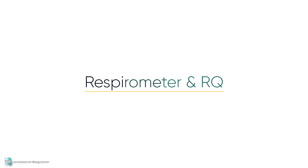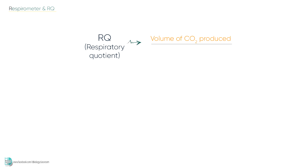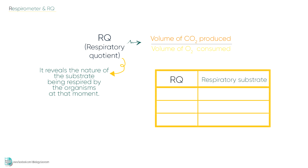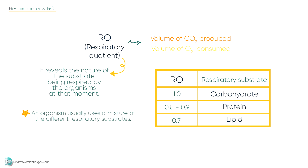Before we talk about how to use a respirometer to determine RQ, let's first understand what RQ is. RQ, or respiratory quotient, is the volume of carbon dioxide produced divided by the volume of oxygen used during respiration. The value reveals the nature of the substrate being respired by the organism at that moment. If RQ equals 1, carbohydrate is being used as the respiratory substrate. If it is protein, RQ is about 0.8 to 0.9, while 0.7 is for lipids. Bear in mind that an organism usually uses a mixture of different respiratory substrates, so the value is influenced by the relative contribution of fat, protein, and carbohydrates rather than just one.